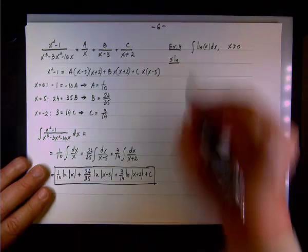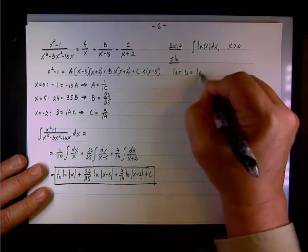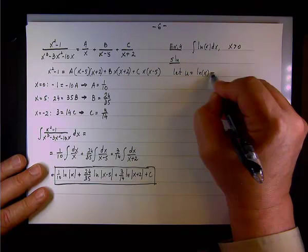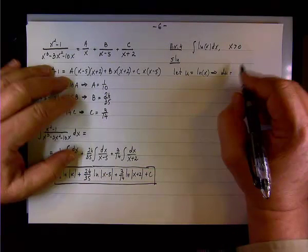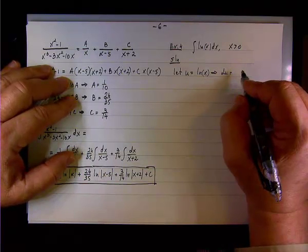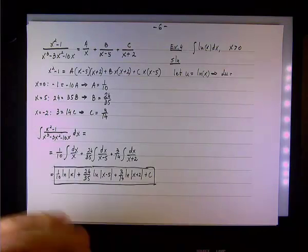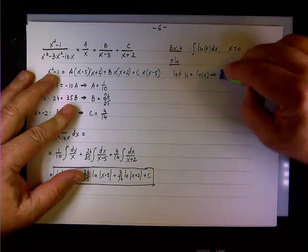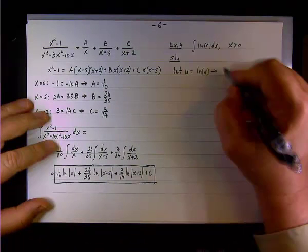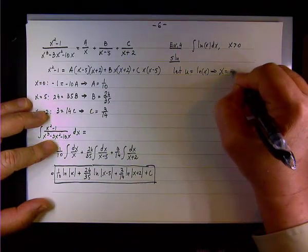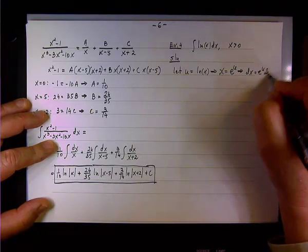What would be the substitution here? Let u equal the natural log of x. The equivalent statement is e to the u equals x, so x equals e to the u, and therefore dx equals e to the u du.